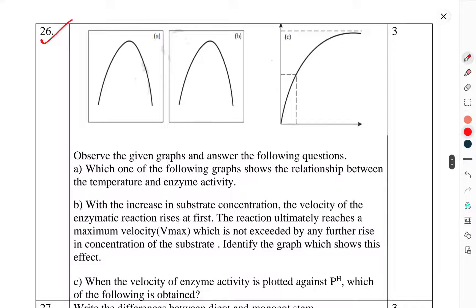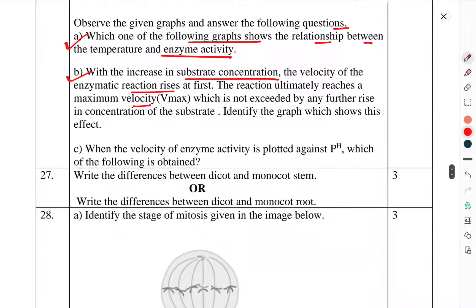Question 26: Observe the given graphs and answer the following questions. A) Which of the following graphs shows the relationship between the temperature and the enzyme activity? B) With increase in substrate concentration, the velocity of the enzymatic reaction rises at first. The reaction ultimately reaches a maximum velocity which is not exceeded by any further rise in concentration of the substrate. Identify the graph which shows this effect.